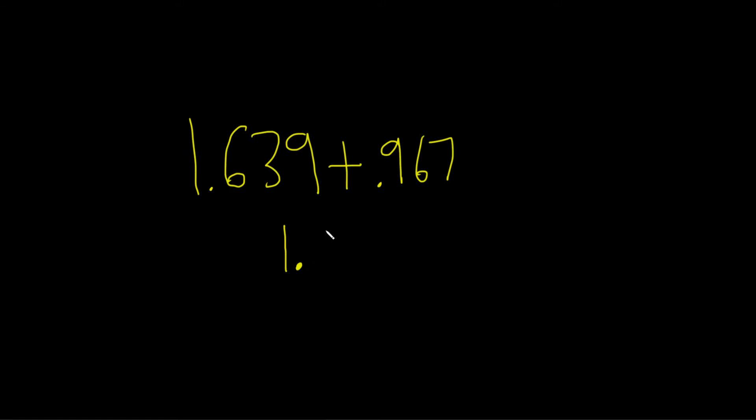We have 1.639, and then down here, we want to line up the decimals, so 0.967. If we like, we can put a 0 here as well. It really doesn't matter too much. Then we draw a line, and we put our plus sign.